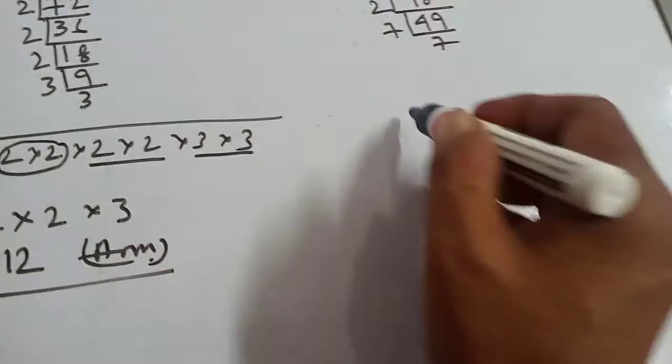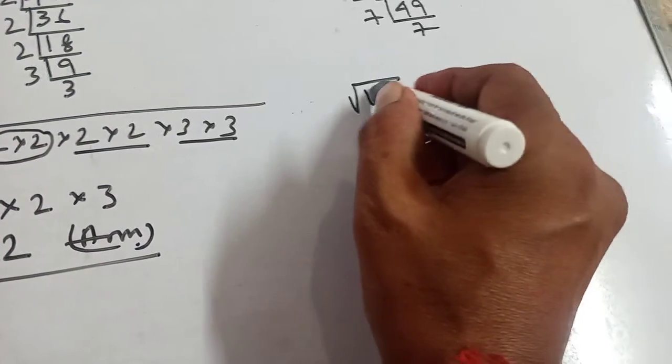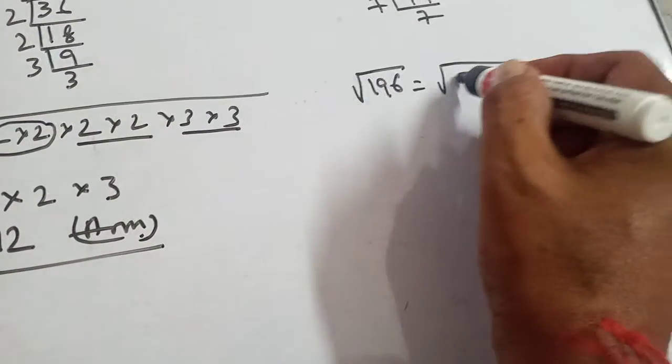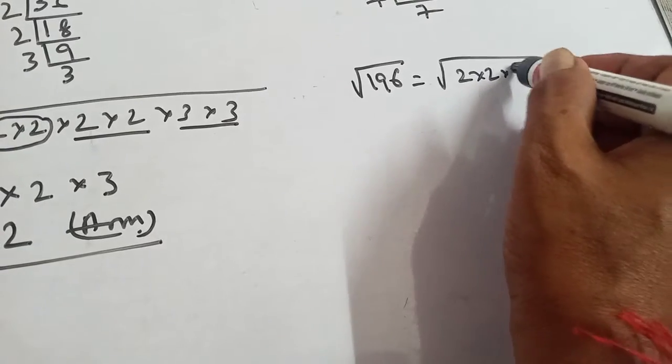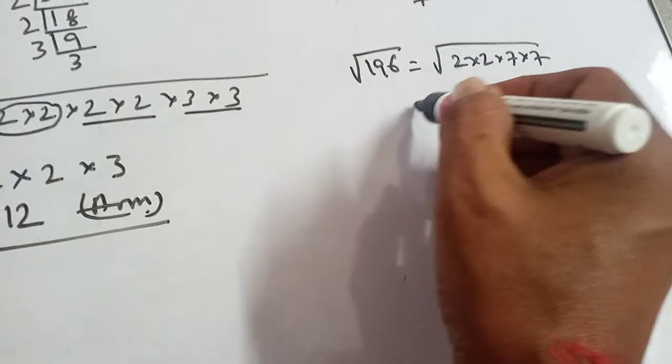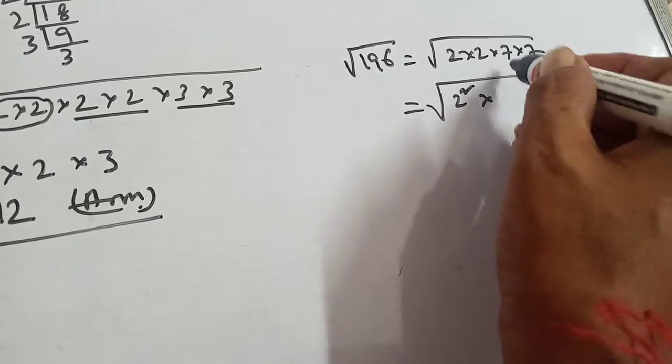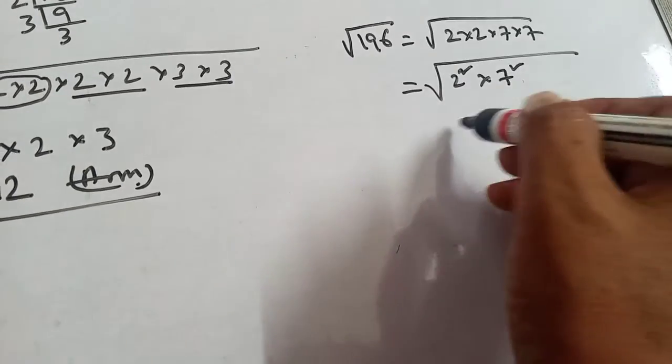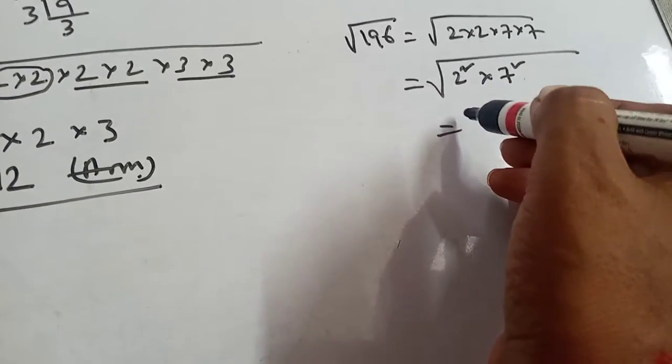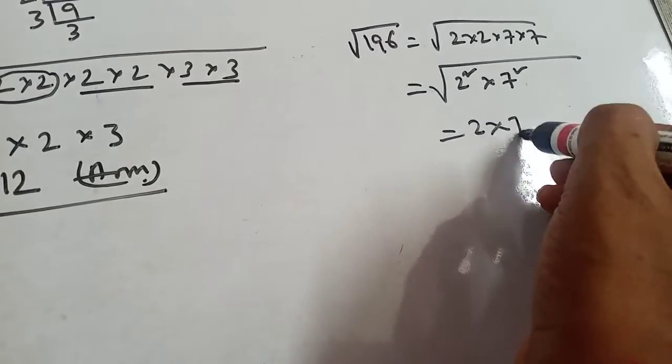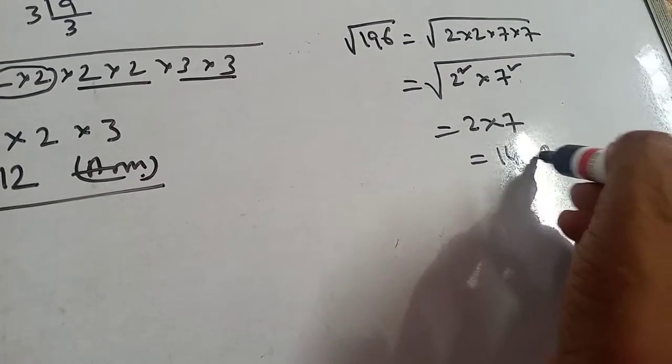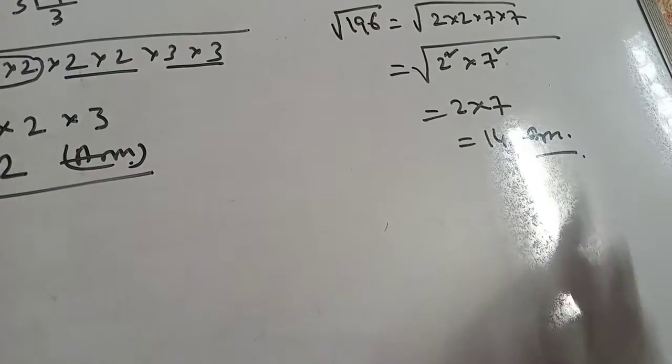Now the required square root of 196 equals root over 2×2×7×7. You break it, 2×2 means 2 square, 7×7 means 7 square. Now one will come, that means 2, and 7 will come. 2×7 equals 14. 14 is the answer.